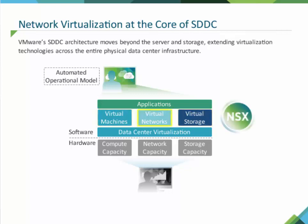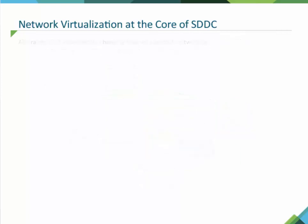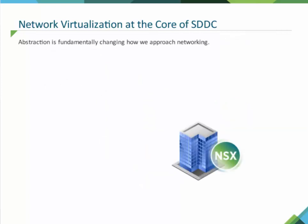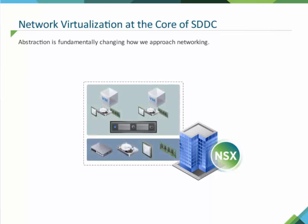VMware NSX, the network virtualization platform, provides the third critical pillar. There is a force at play here that is fundamentally changing how we approach networking — that force is abstraction. It's really about moving or redirecting the intelligence that traditionally has been in hardware into software, leaving a simple pool of IP packet forwarding capacity in the physical layer of the data center.